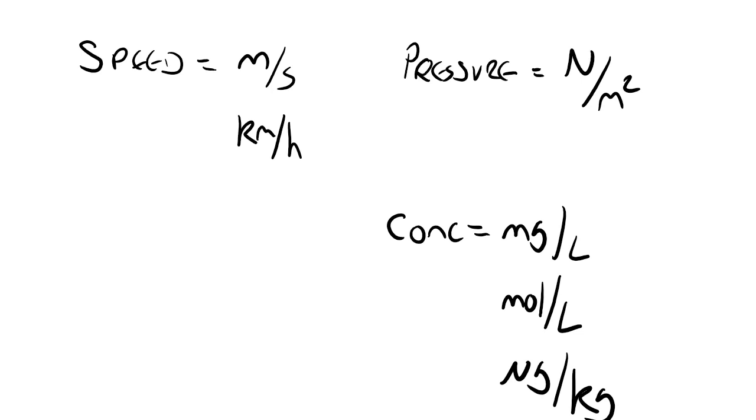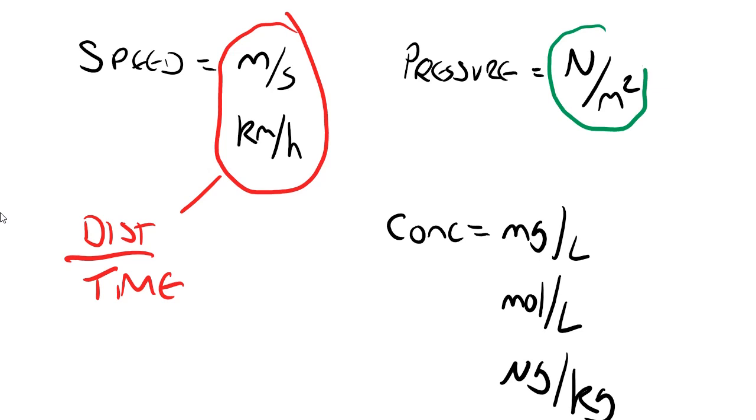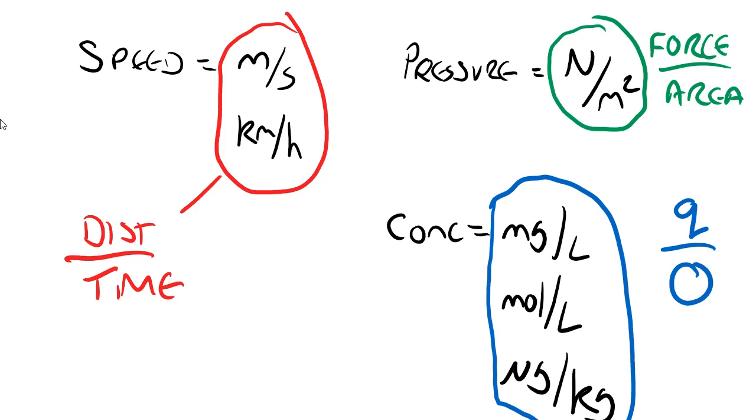The important thing is that all of these units are giving us the equation required to calculate that quantity. The units of speed tell us that we need to measure some distance and the time taken to cover that distance. The units of pressure tell us we need to measure some force and the area over which that force is operating. And the units of concentration tell us that we need to measure a quantity of something which is then dispersed in a larger quantity of something else.